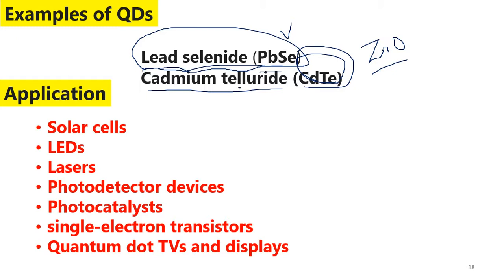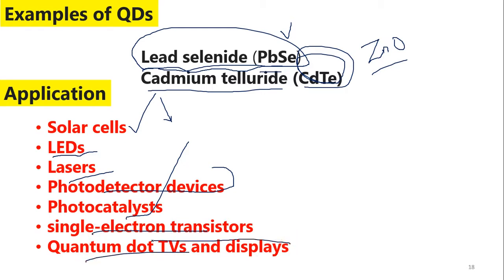You may ask why this matters — it's because quantum dots have so many applications: quantum dot solar cells, light-emitting diodes, lasers, photodetector devices, photocatalysis, single-electron transistors, and quantum dot TVs and displays. The next generation of displays will be based on quantum dots. This video was just an introduction to quantum dots — what they are, how they are useful for different devices, and how changing the size of quantum dots affects the color and band gap.